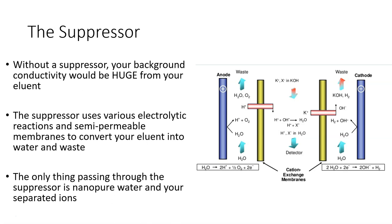Setting your suppressor's current too high can result in seeing no peaks at all, and setting your suppressor's current too low can result in ridiculous looking massive peaks and a ton of background noise. In the end, the only thing that passes through your suppressor is nano pure water and your separated ions, so your conductivity detector can work efficiently.